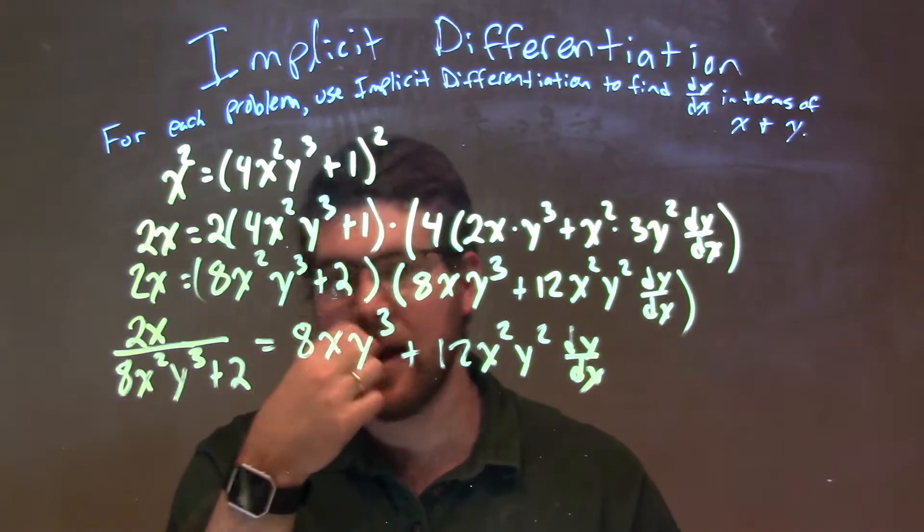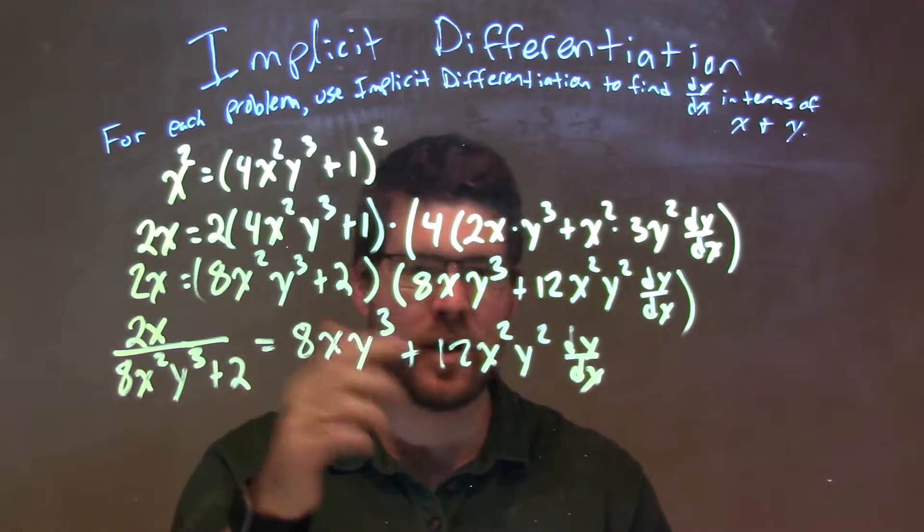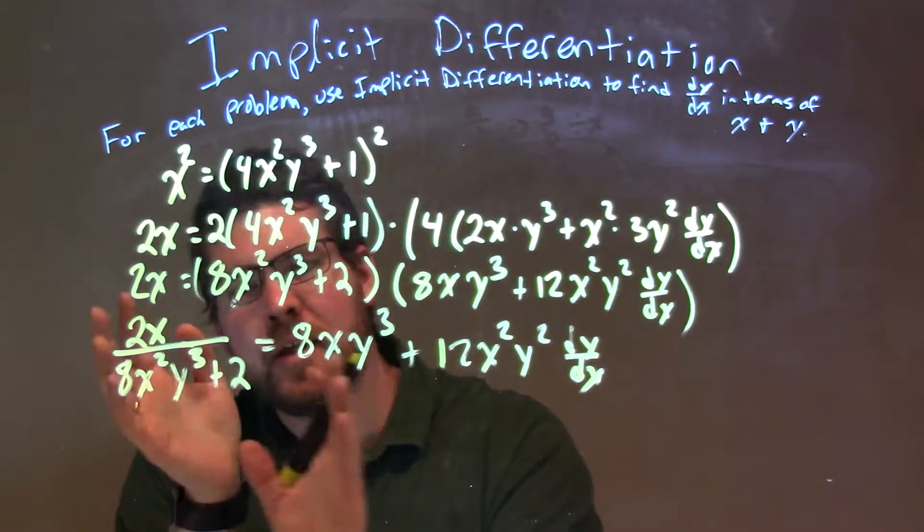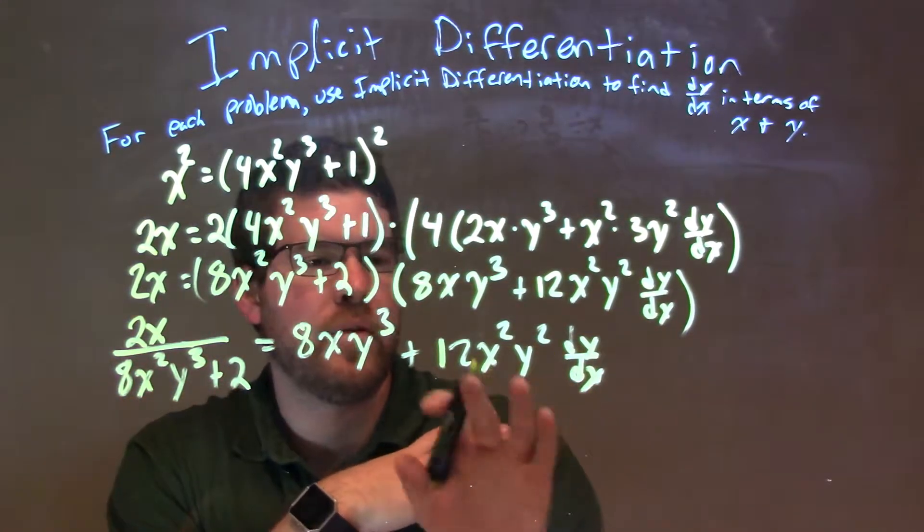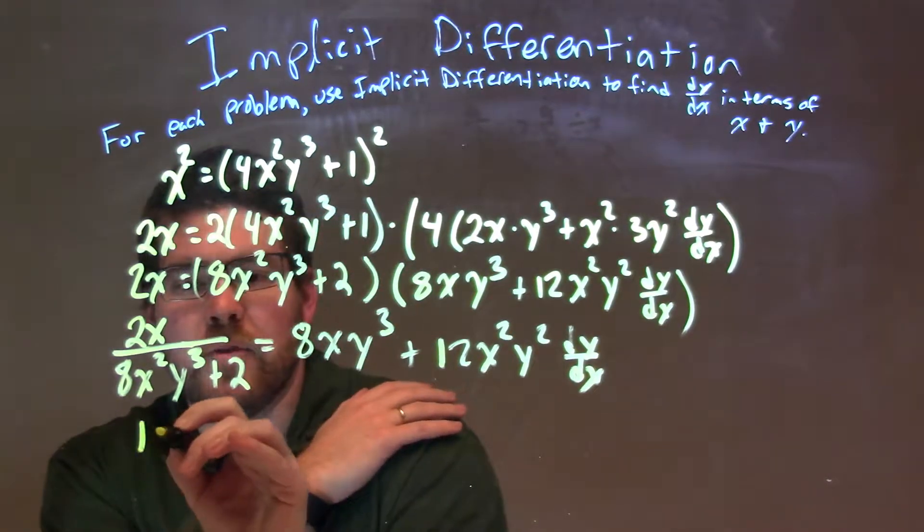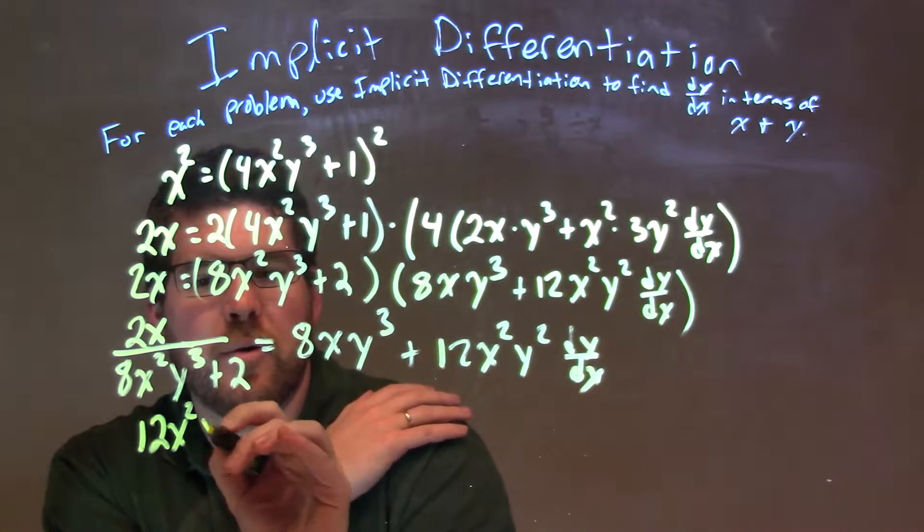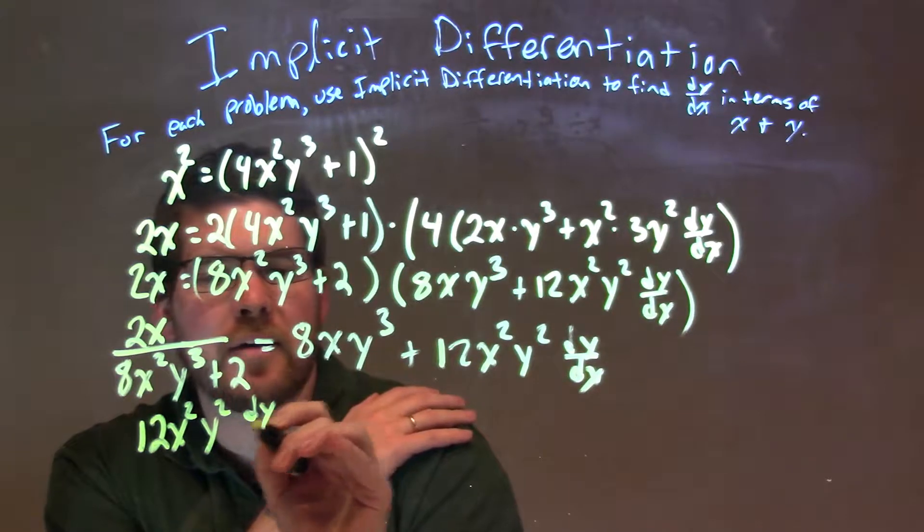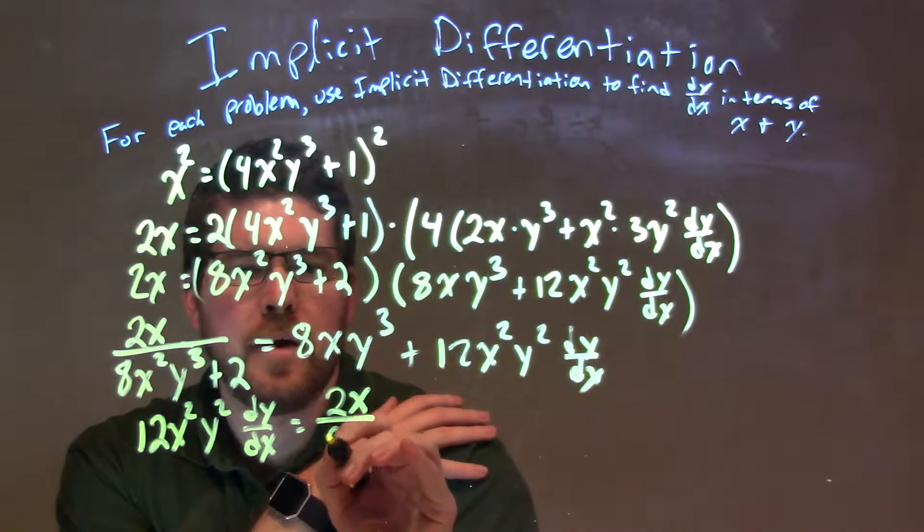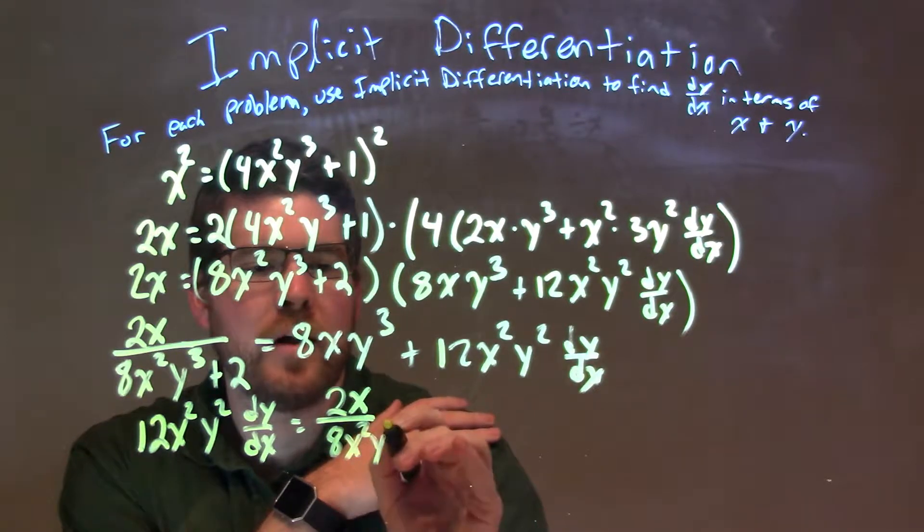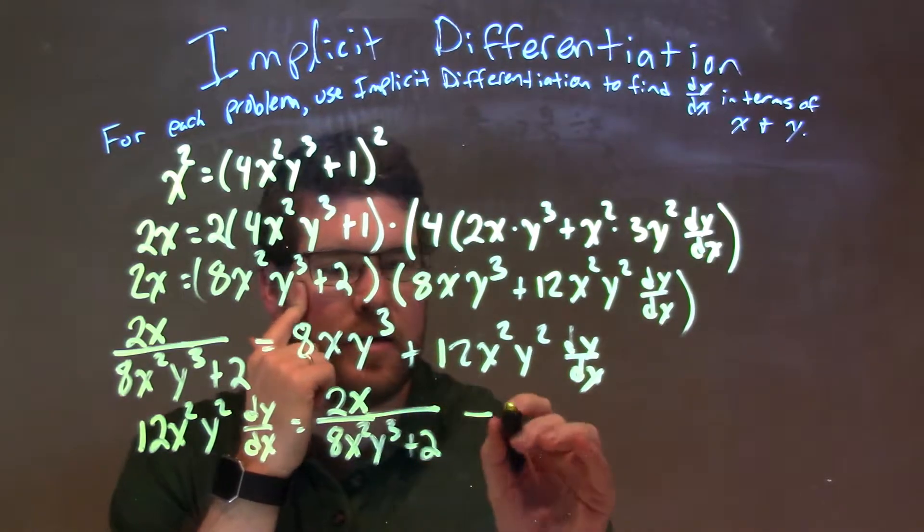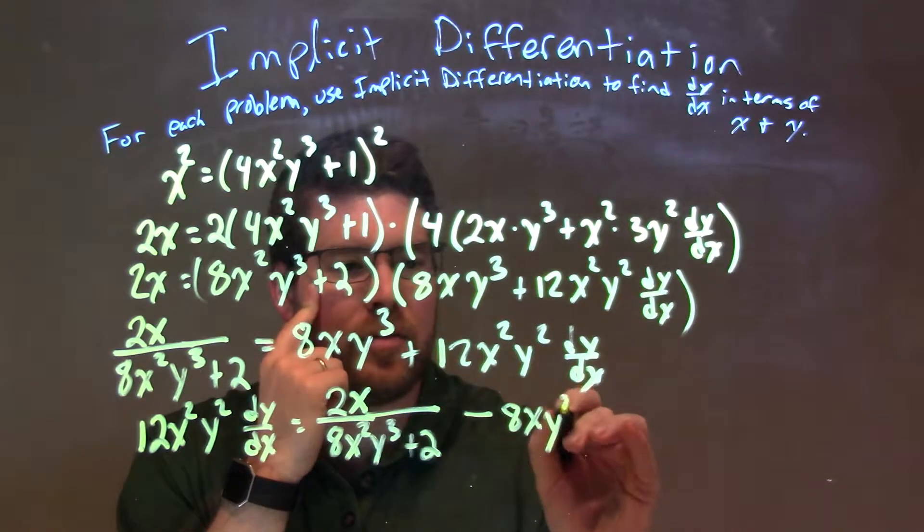I now can subtract this 8xy to the third from both sides, giving me this here by itself. And I'm going to rearrange it, putting this 12x squared y squared dy/dx by itself first out front. So I'm flipping around: 12x squared y squared dy/dx is equal to 2x over 8x squared y to the third plus 2, minus that 8xy to the third.